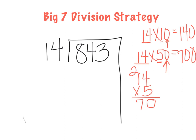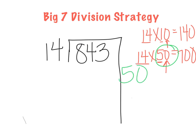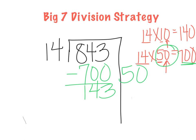So my first big chunk is 50. I'm going to put 50 on the outside. We know that 14 times 50 gives us 700, so I put 700 inside and subtract. 3 minus 0 is 3, 4 minus 0 is 4, 8 minus 7 gives me 1. So now my new dividend is 143. We had already calculated 14 times 10 gives 140, which is pretty close. So let's pull out a chunk of 10 — 14 times 10 is 140.